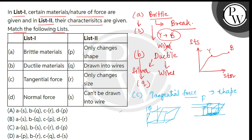यहाँ सिर्फ shape change हुई है। तो we can say that answer for entry C will be P. Recall करें — A entry का answer था S, B entry का answer है Q, C का है P.